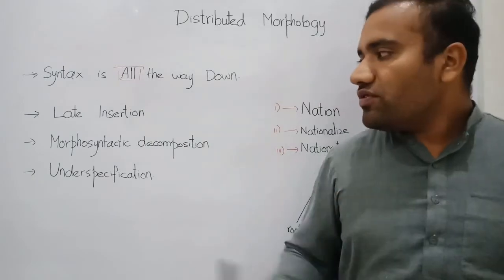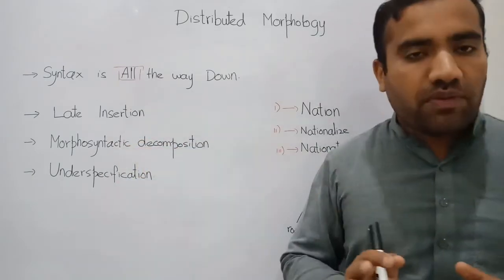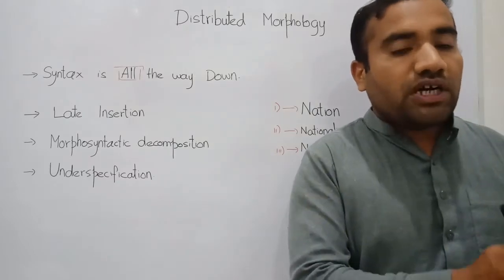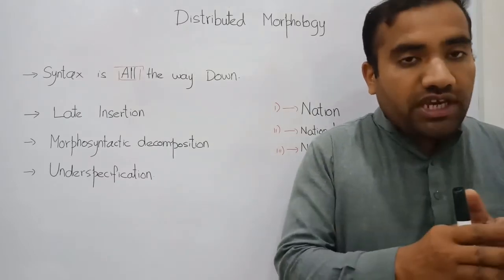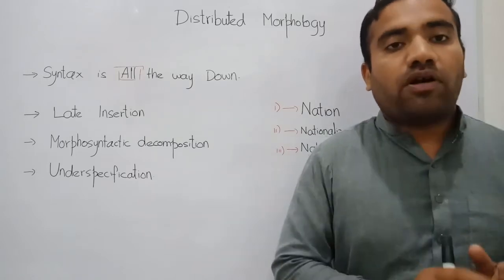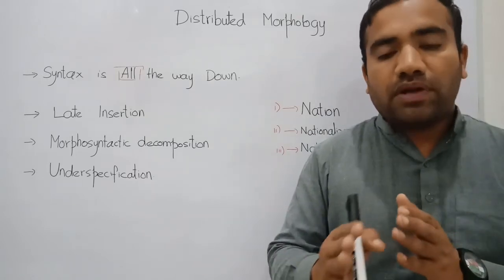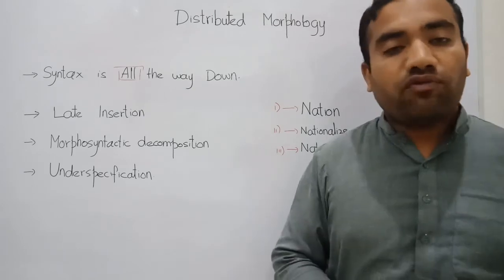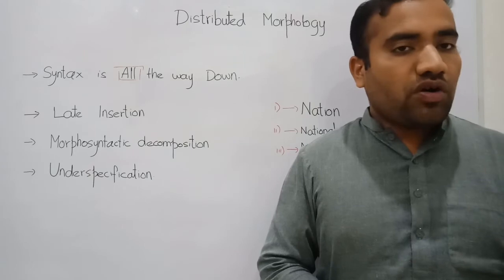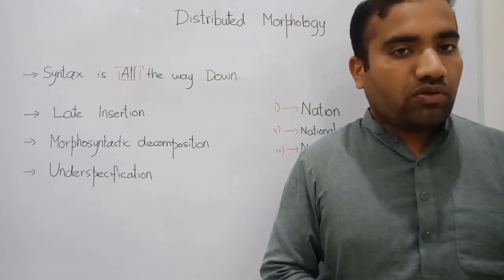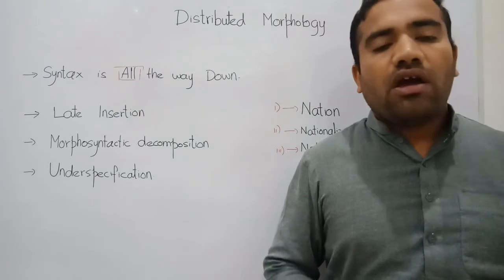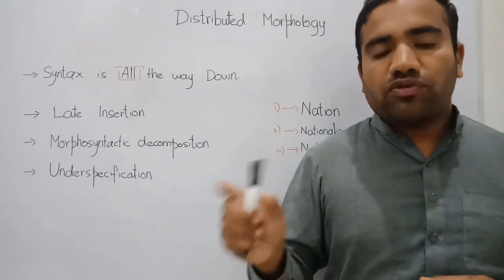The second core is morphosyntactic decomposition. This means that every part of a word can be decomposed — we can cut every part of the word and analyze whether it is operating as a noun, a verb, an adjective, or whatever category the word belongs to.